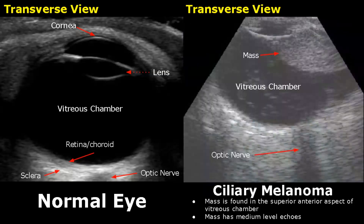Ciliary melanoma is another intraocular tumor. The mass is found in the upper part of the image at the superior anterior aspect of the vitreous chamber, and this mass will also have medium-level echoes.